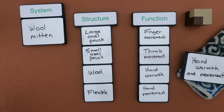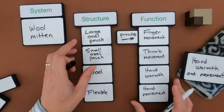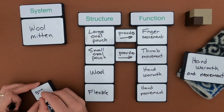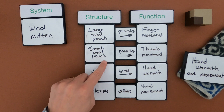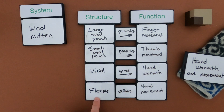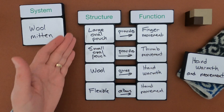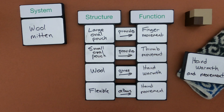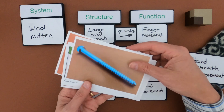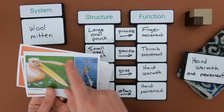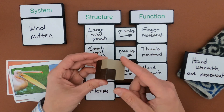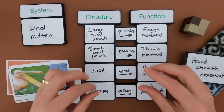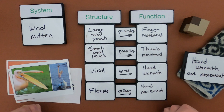The next thing I would do is show the relationships between those. The large oval pouch provides finger movement, the small oval pouch provides thumb movement, the wool gives hand warmth, and the flexible material allows hand movement. What I've shown here is how the structures — what it looks like and how it's made — relate to the function. Now I'd like you to try the same thing using the thinking slides below with a lag bolt, and then start thinking about the same thing using the beak of a pelican. Structure and function really go together — the structure determines the function and the function depends on the structure. That's structure and function level one, and I hope that's helpful.